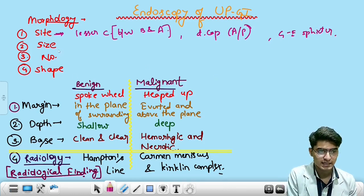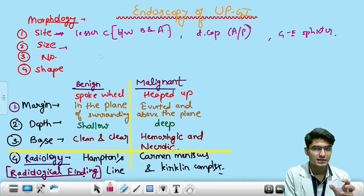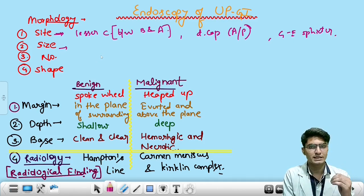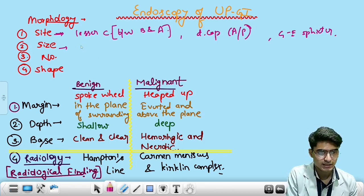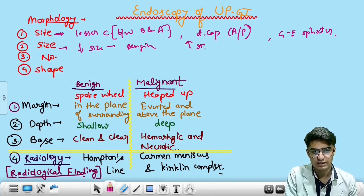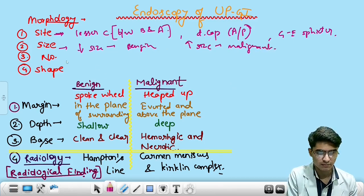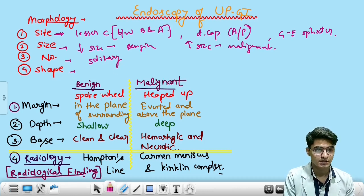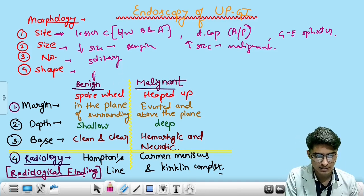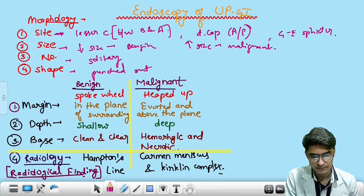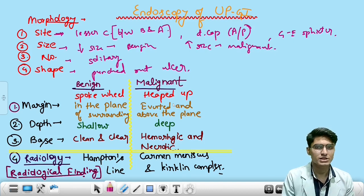Regarding size: if the size of the ulcer is larger, the malignant tendency of the ulcer increases. If the size is smaller, it is more commonly benign. Remember, they are more commonly solitary. The shape of the ulcer is a punched-out ulceration — a punched-out ulcer.